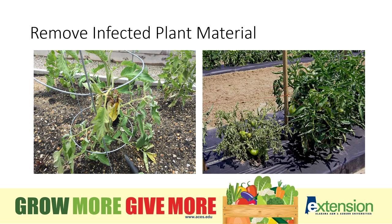Another tip is to remove infected plant material anytime during the growing season. If you see spots on leaves or maybe you see a sick plant, pull out the infected plant material. On the left hand side, we have a few leaves that have brown spots — I'd go in and just cut off those infected leaves and throw them in the garbage. On the right hand side, we have a sick tomato plant. I'd pull the entire plant even if I don't know exactly what's causing the problem. I'm just trying to be safe and preventing anything contagious from spreading within the garden.